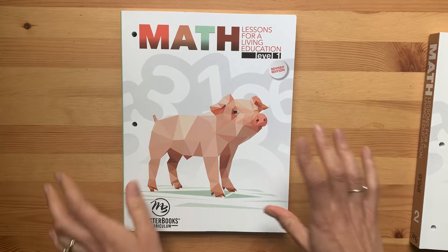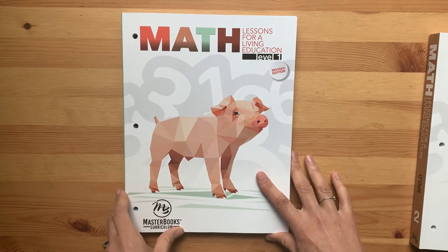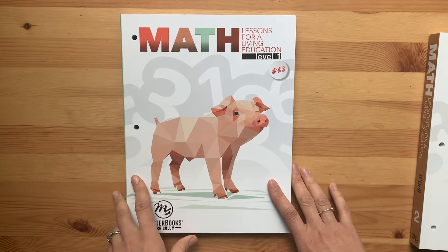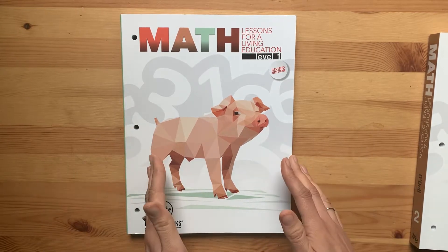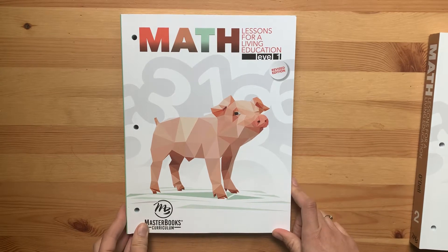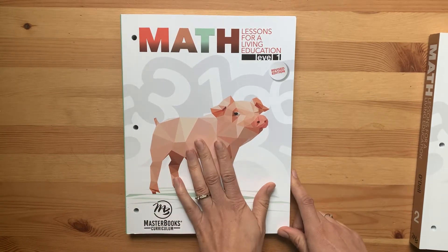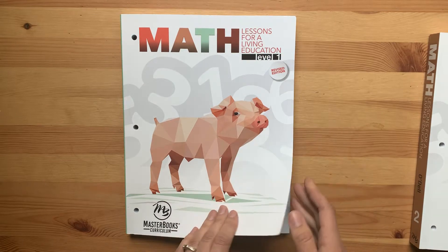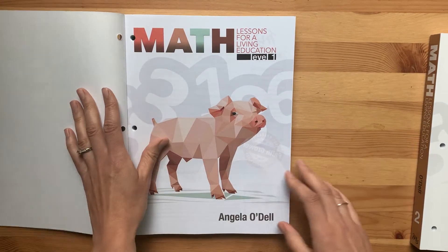I just really wanted to try Masterbooks this year. I really like the layout and some of the story base. It's shorter, a little bit less parent involved, so that's why we are trying that. For those of you interested in Level 1, I'm going to do a flip through for you of what the pages are like and what to expect inside.